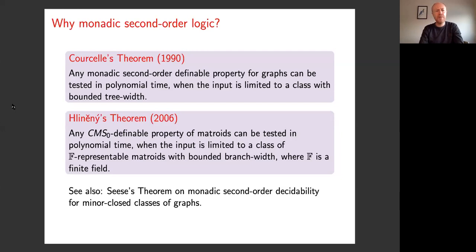There's a famous theorem by Courcelle. Courcelle's theorem tells us that if you have a monadic second-order definable property for graphs, you can test that property in polynomial time, as long as you limit your input class to a class of graphs with bounded tree width. This is interesting because monadic second-order definable properties are in general NP-hard to test — you can define Hamiltonicity in monadic second-order logic, for example. But if you impose some constraint on structural complexity by limiting a width parameter, that intractable property becomes tractable. There's a connection between structural complexity and complexity theory.